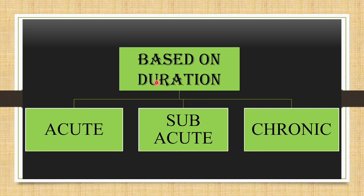Coming to the classification based on duration: it has been classified into acute pain, subacute pain, and chronic pain. Acute pain lasts for a relatively short period of time, usually less than seven days. Subacute pain lasts for a maximum of three weeks duration. Chronic pain doesn't have any apparent cause and lasts more than 12 weeks or three months.